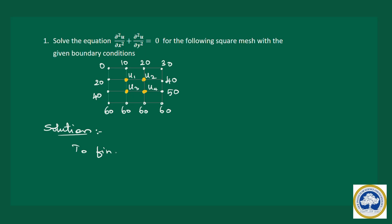Let us assume these four unknown interior values as u1, u2, u3, and u4. Our aim is to find the values of u1, u2, u3, and u4. One thing to note is whether we can use a symmetric property — if boundary values coincide along the x-axis, y-axis, or diagonal. But in this problem, we cannot use symmetric property because all the boundary values are different. So we have to find all four values.